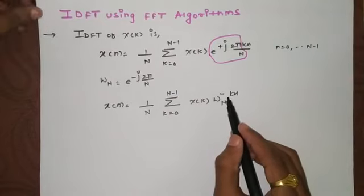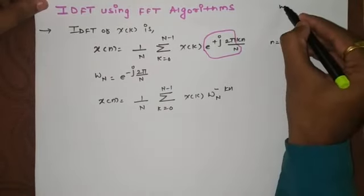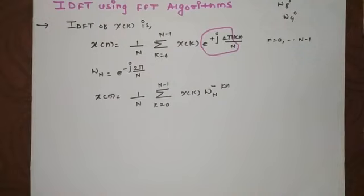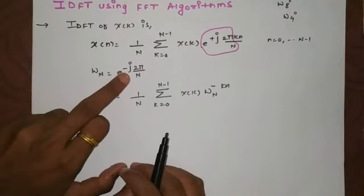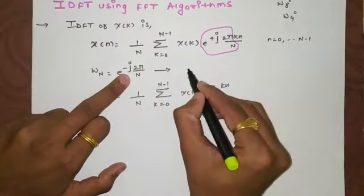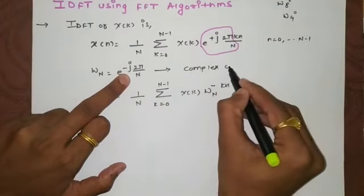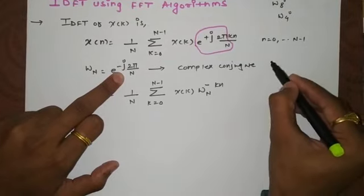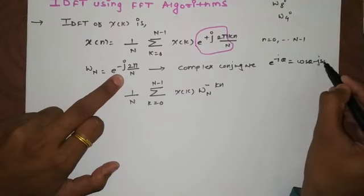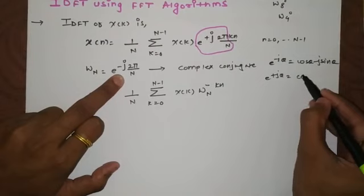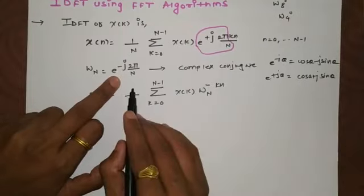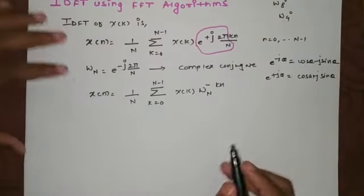The key issue is that the twiddle factor we're getting has a negative exponent — omega_N raised to minus k n — but for 4-point or 8-point FFT the twiddle factors should be positive. To make this positive, note that this is an exponential term e raised to minus j, and e raised to minus j can be written as e raised to plus j if and only if we take its complex conjugate. Taking the complex conjugate of e raised to j theta gives cos theta plus j sine theta, making the representation in positive terms possible.